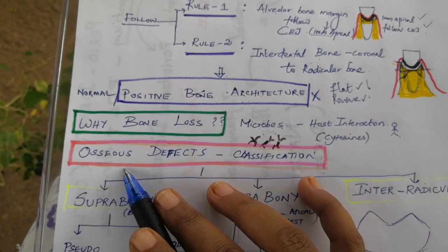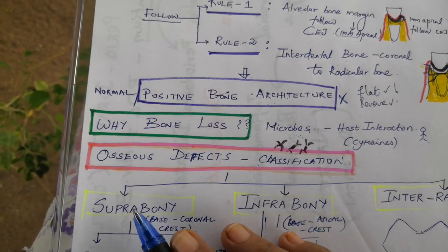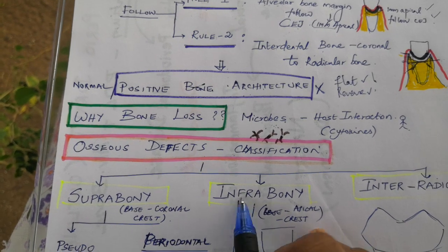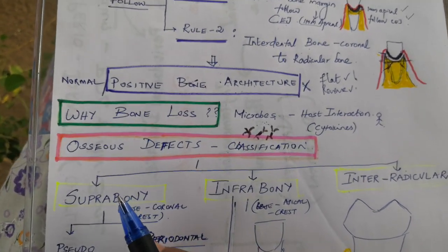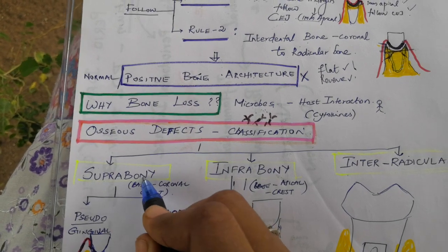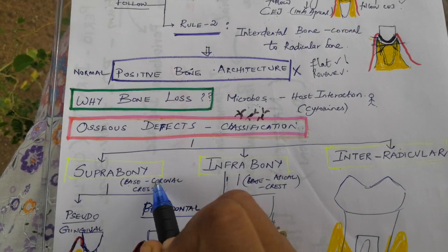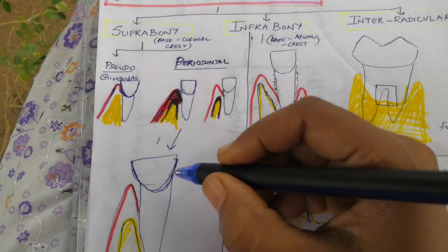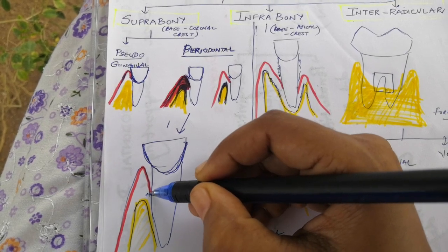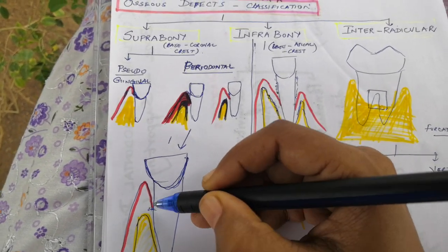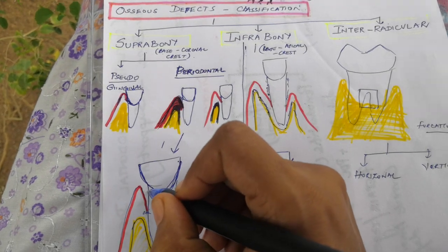The main osseous defects seen in periodontal disease are supra-bony, infra-bony, and interradicular defects. In supra-bony defects, the base of the pocket is coronal to the alveolar crest. The base of the pocket is above the alveolar crest, so we call it a supra-bony pocket. This is a true pocket where periodontal destruction has occurred.